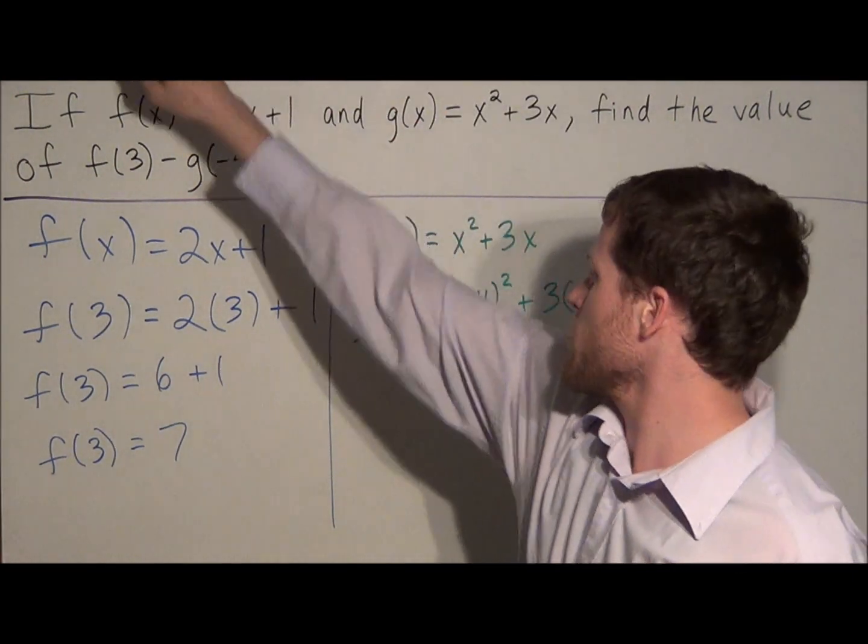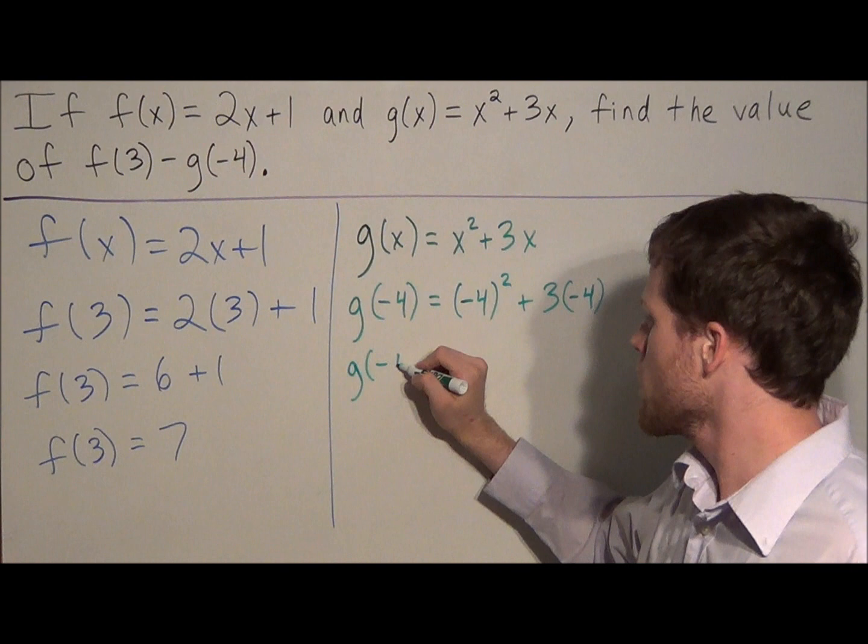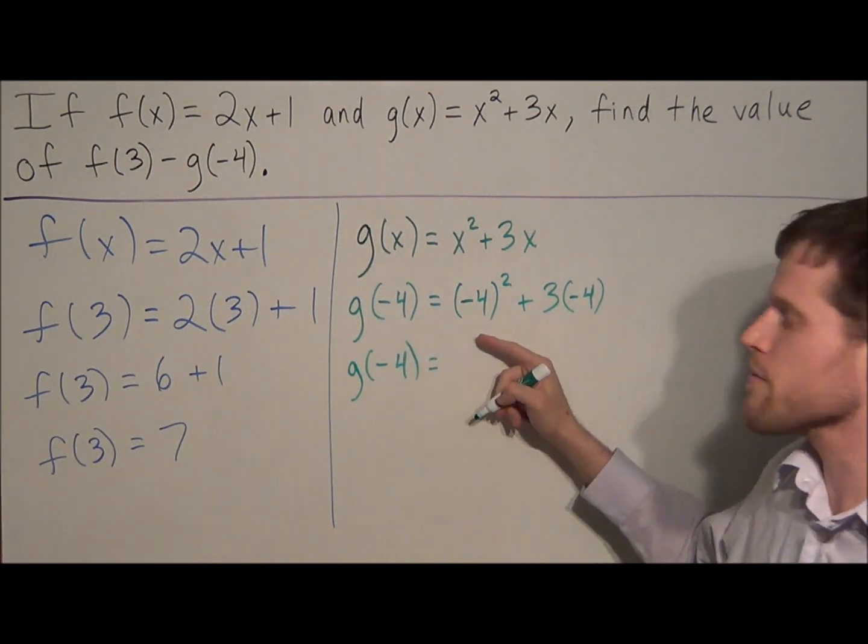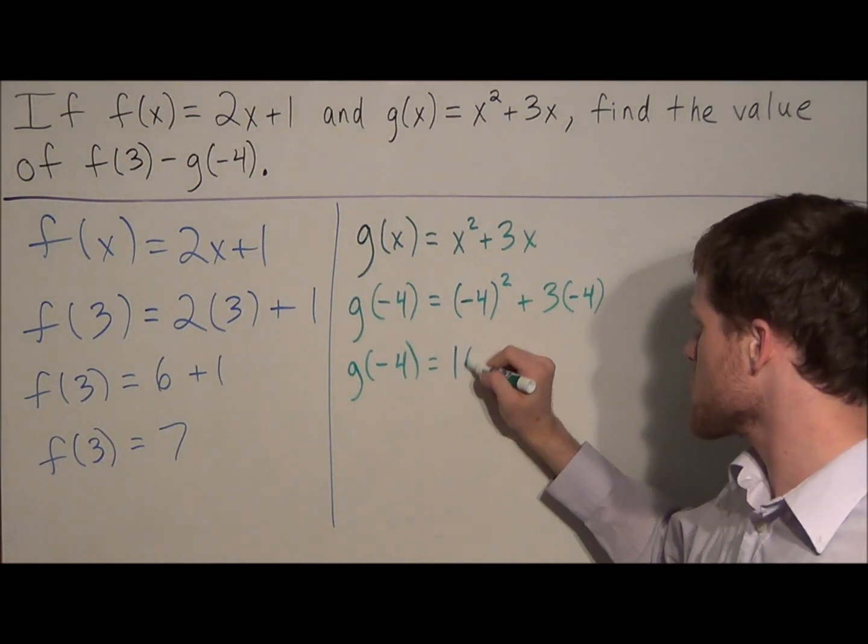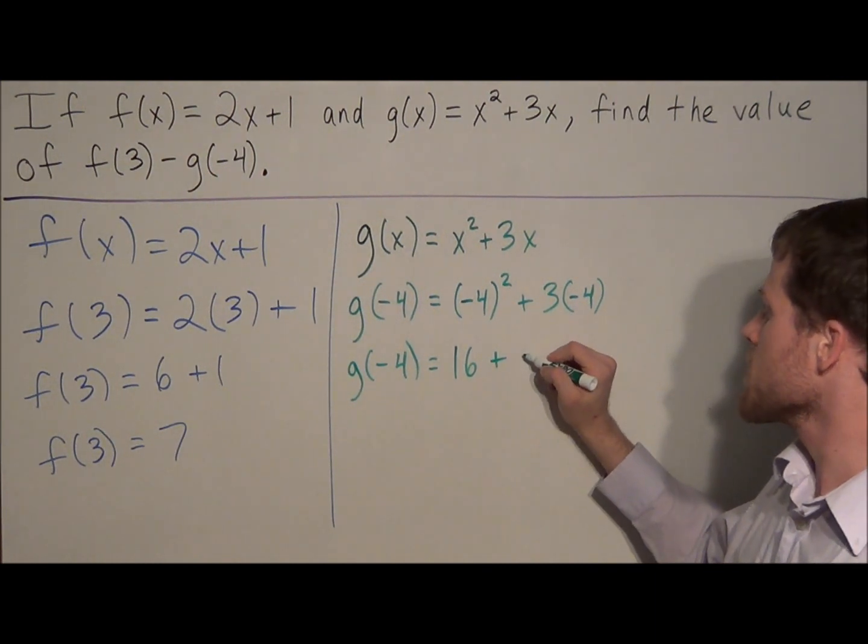So we continue to simplify. Now we have g of negative 4 is equal to negative 4 times negative 4 is positive 16, and we have plus 3 times negative 4 is negative 12.